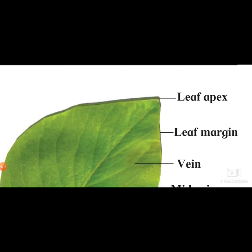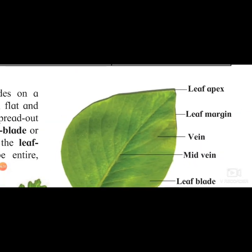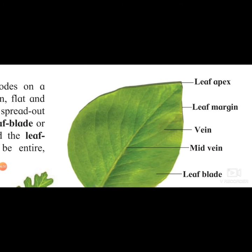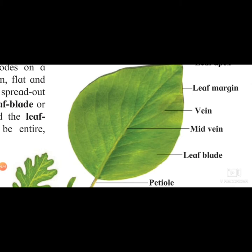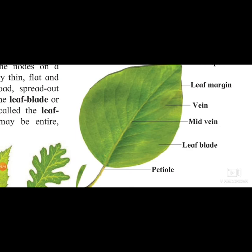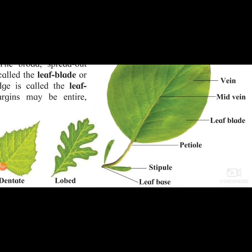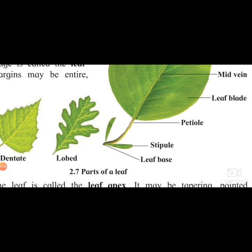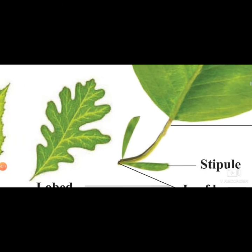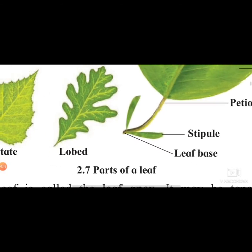The border of the leaf is the leaf margin. The fine lines present on the leaf are called veins. The middle line passing through the leaf and dividing it into two parts is called the midvein. The small stalk joining the leaf to the node or stem is called the petiole. The small leaf-like structures near the leaf base are called stipules. The part where the leaf is connected to the stem is called the leaf base.